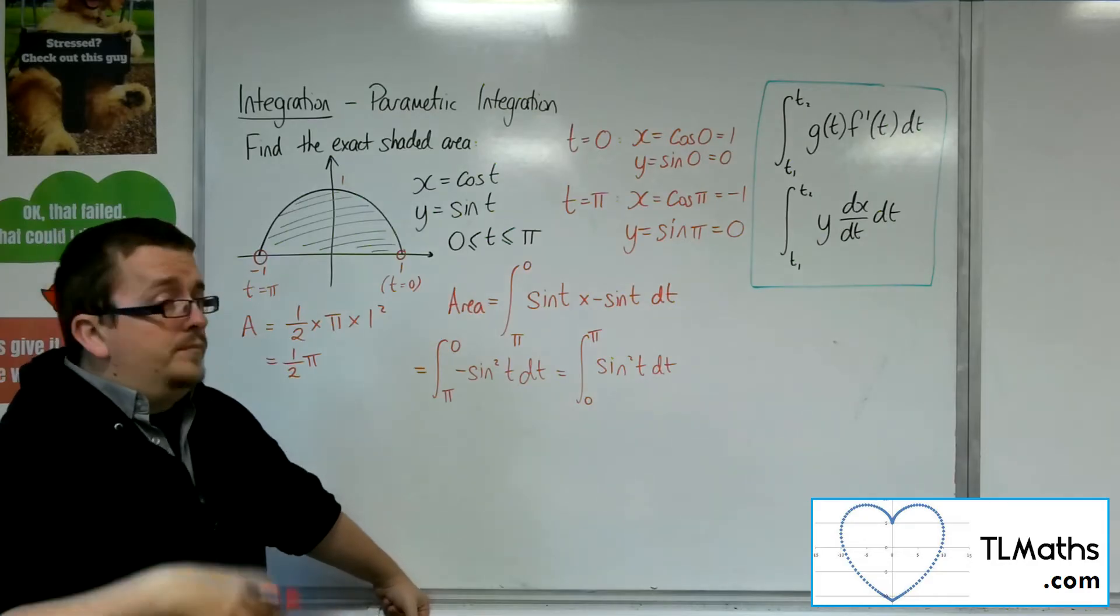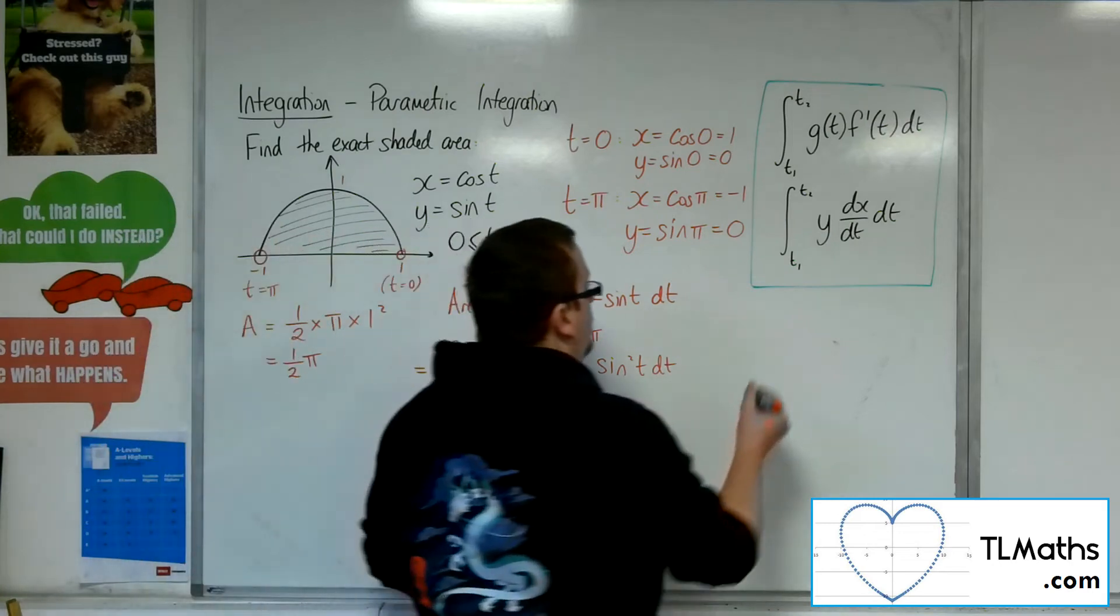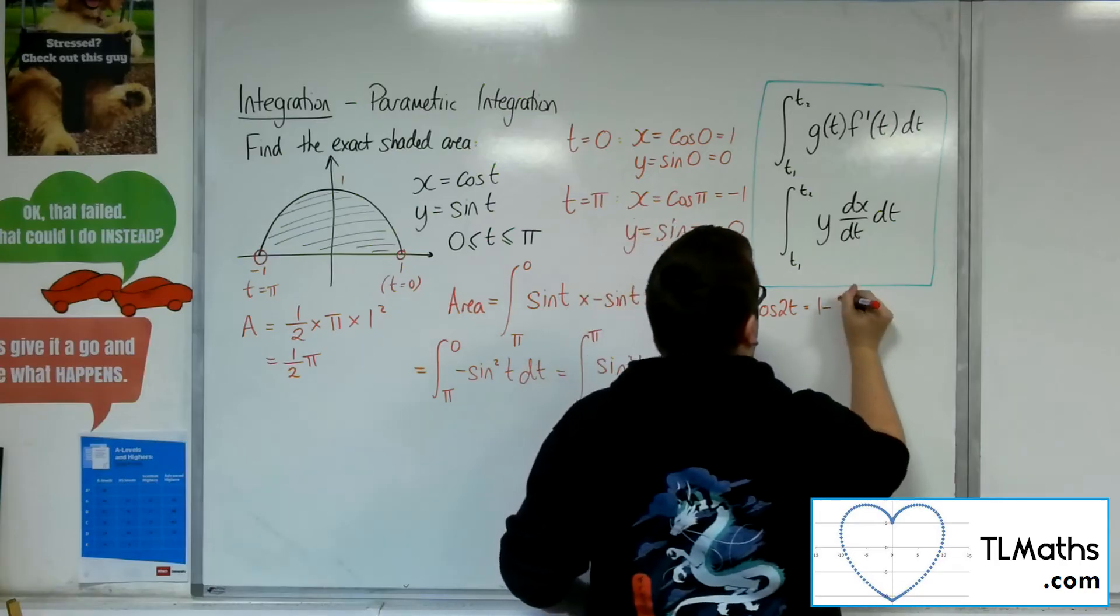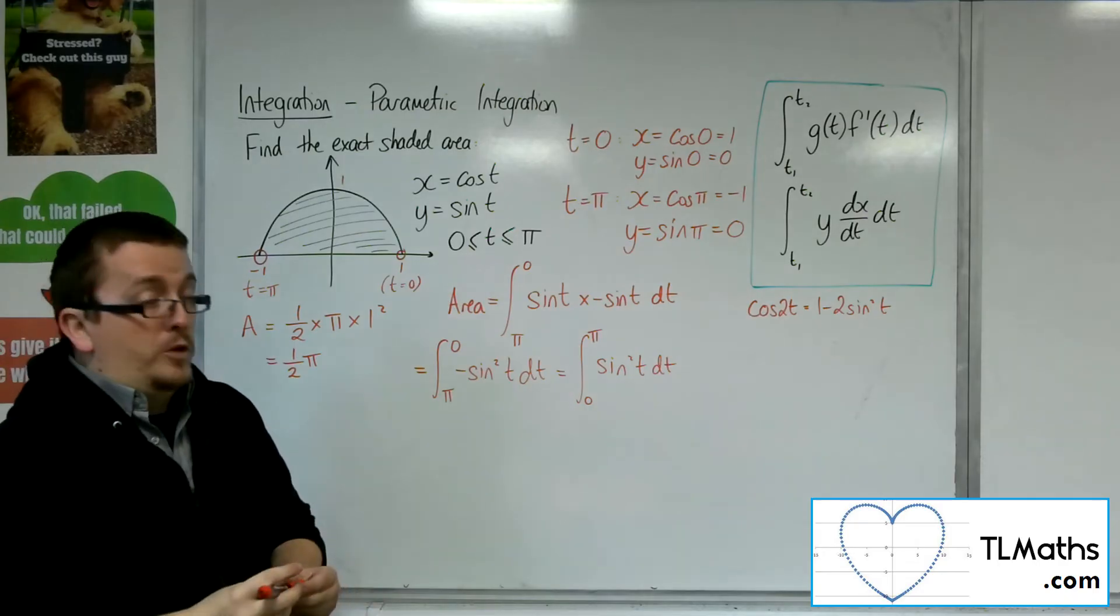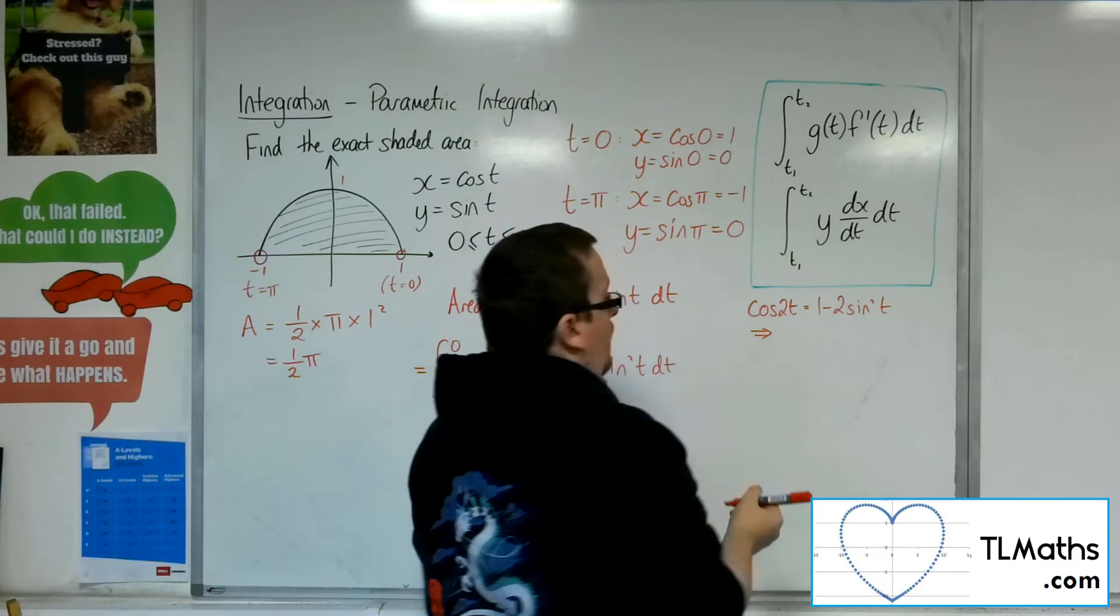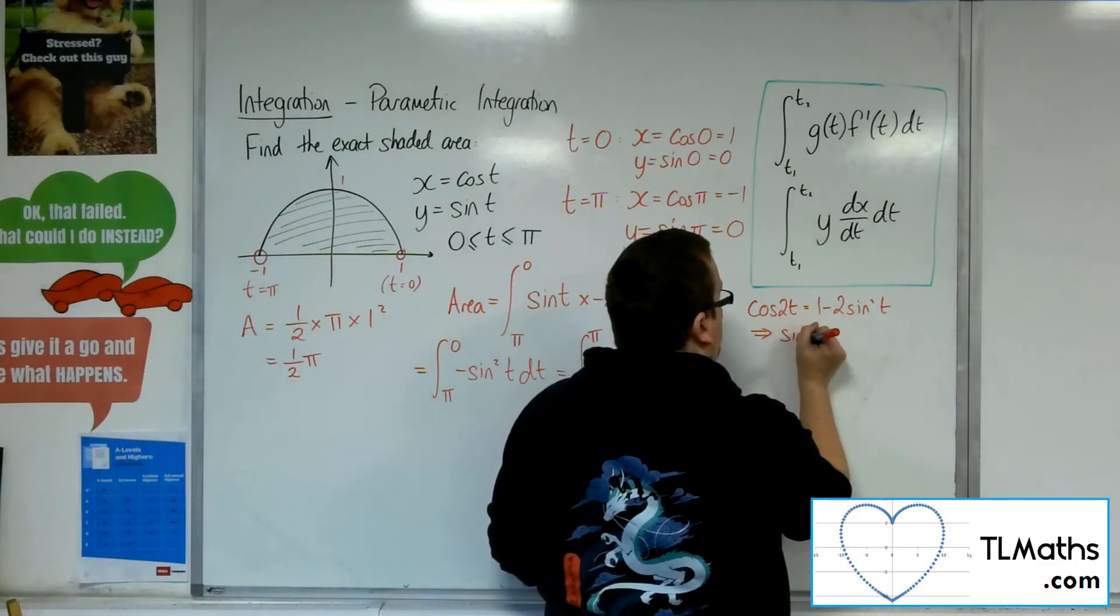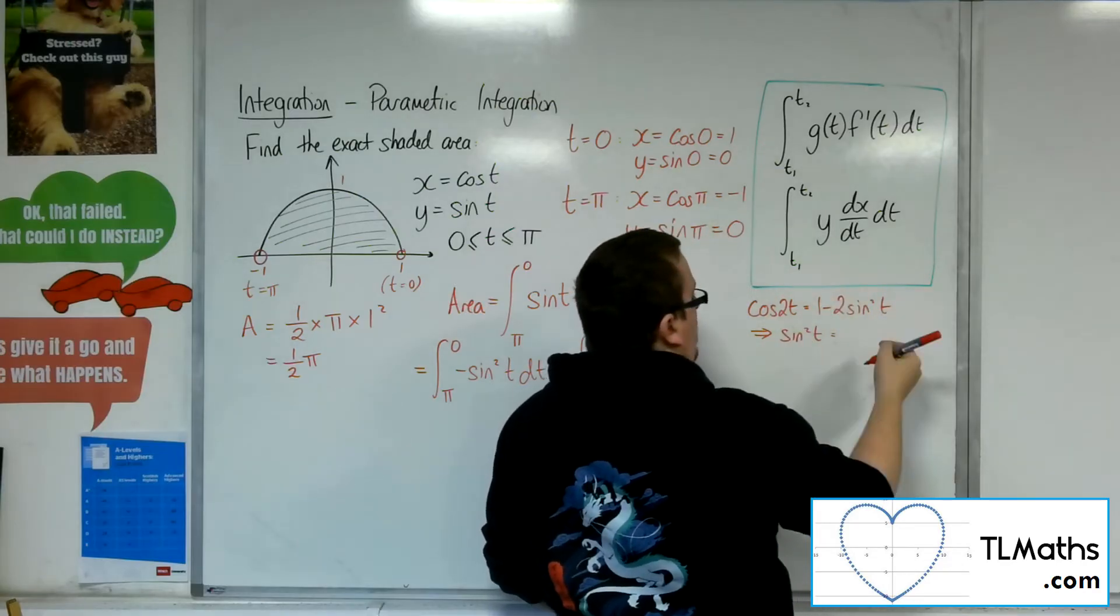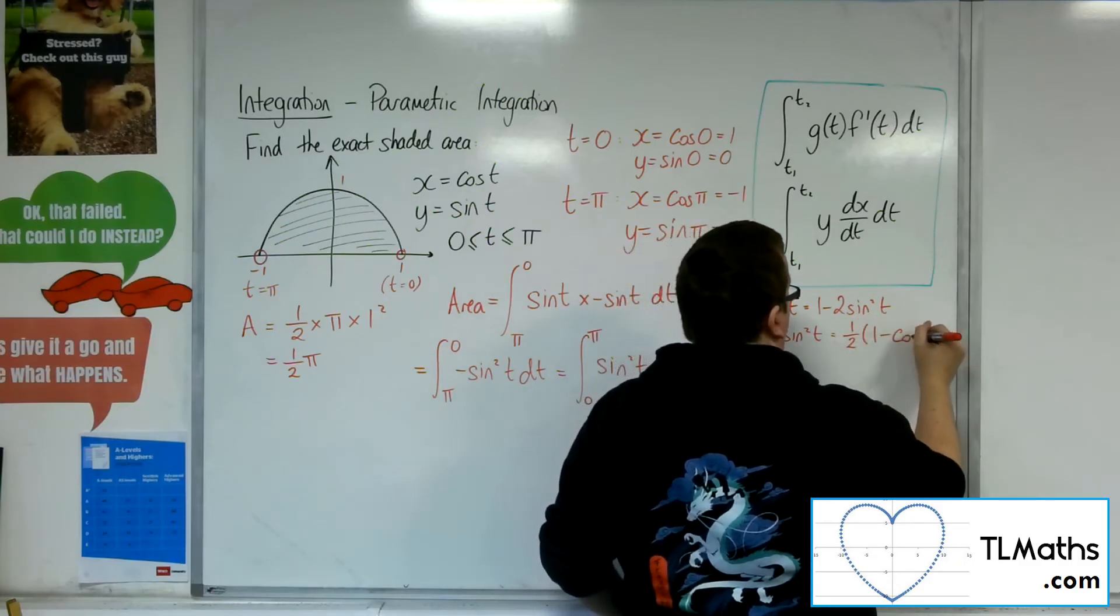Now, in order to integrate sine squared, I'm going to have to use a double-angle formula. So we know that cos 2t is 1 minus 2 sine squared t. So rearranging that, if you haven't seen double-angle formulas, you'd need to know that in order to access this problem. So sine squared, rearranging, will be 1 minus cos 2t over 2. So 1 half of 1 minus cosine 2t.